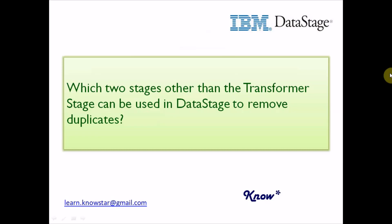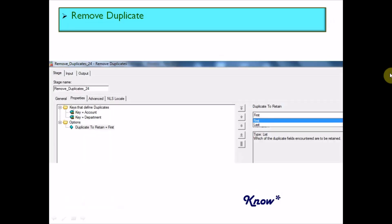So, which two stages other than the Transformer stage can be used in Data Stage to remove duplicates? We know that we can implement this logic using the Transformer stage variables, but Data Stage provides many other easy stages to perform this logic. The first one is obviously the Remove Duplicate stage — as the name suggests, it's a stage used to remove duplicate data in your source. This is how the stage editor window looks like for this stage.